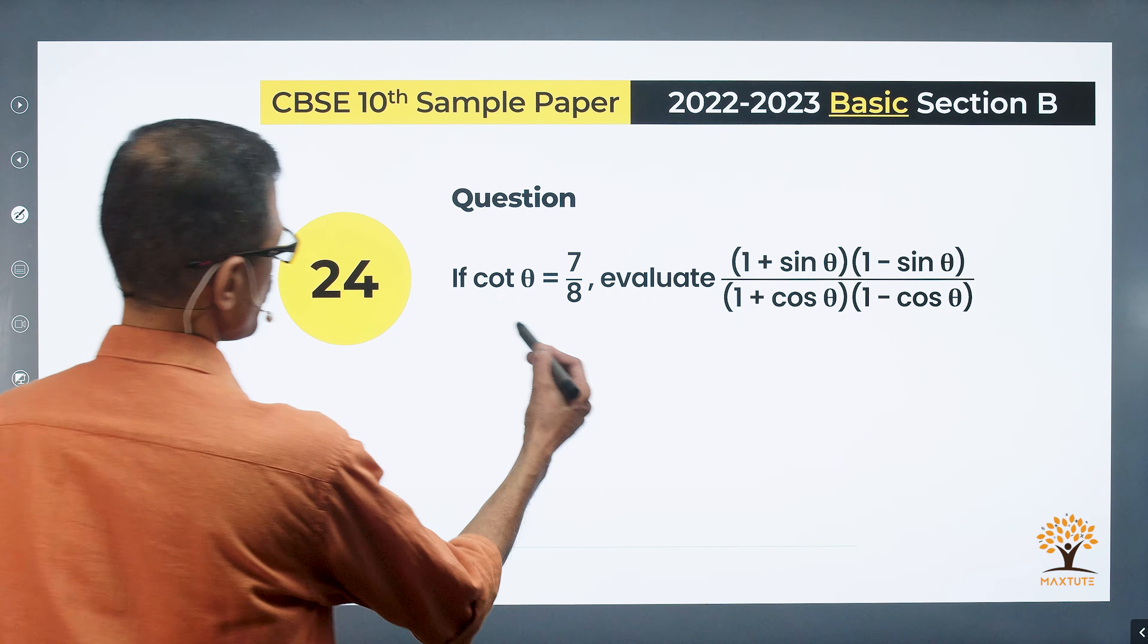1 minus sine squared theta is cos squared theta. 1 minus cos squared theta is equal to sine squared theta. Cos theta by sine theta is cot theta. So the squares will make it as cot squared theta.